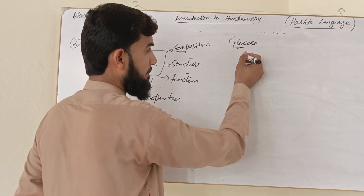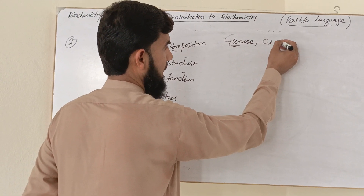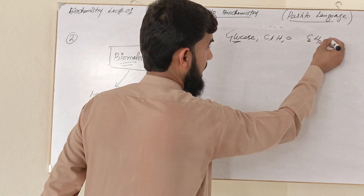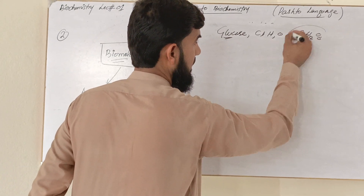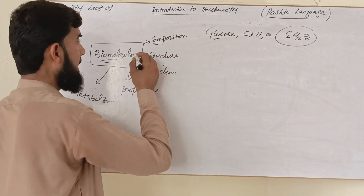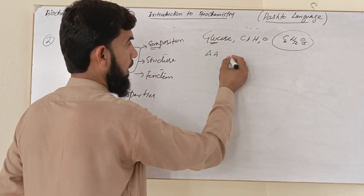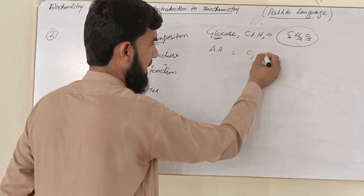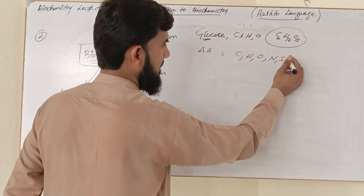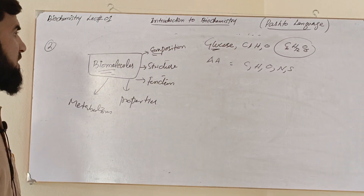For example, the composition of carbohydrates consists of carbon, hydrogen, and oxygen — as in glucose with the formula C6H12O6. Amino acids are composed of carbon, hydrogen, oxygen, nitrogen, and a small amount of sulfur.